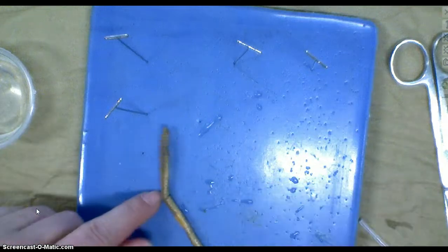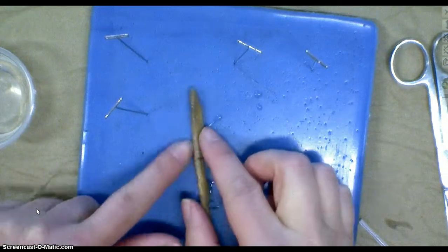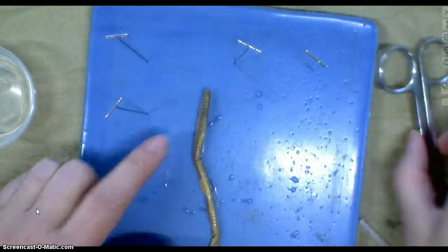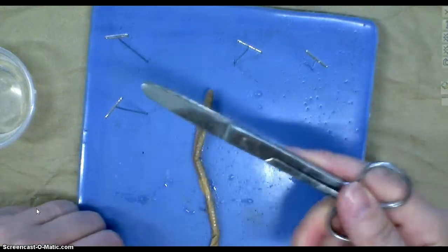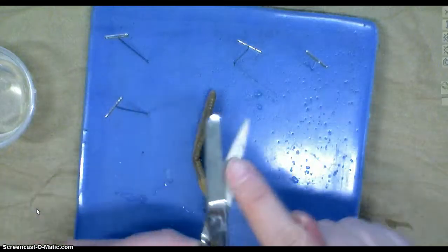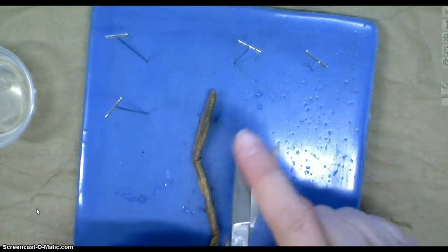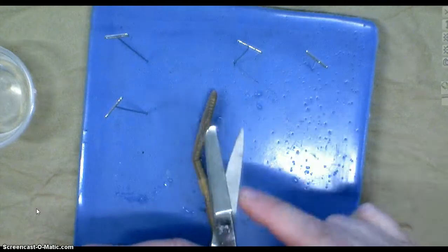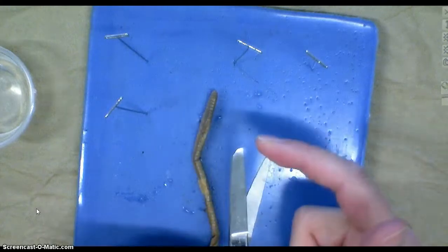Now, everyone gets all excited about dissection because they get to use sharp things and they think they're all cool. The only sharp thing you're going to be using today is the scissors, which we are going to make some points about. Notice it has a pointy end and a blunt end, and they are built that way for a specific reason. The first time you go to make an incision, you do put the pointy end down.